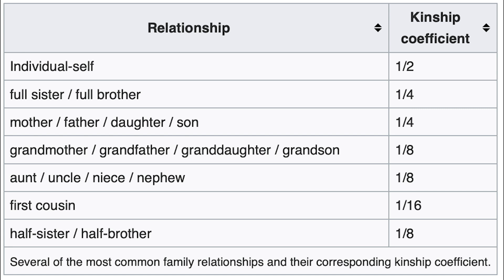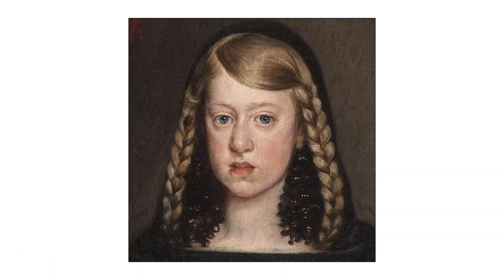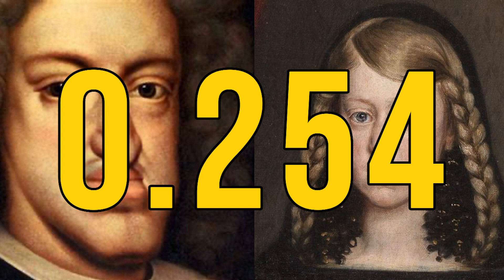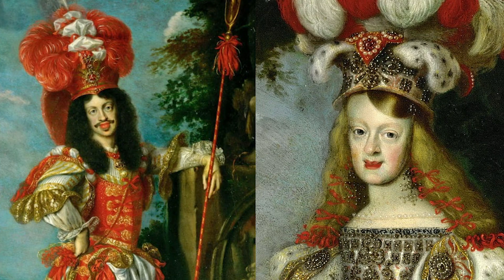However, the consanguinity coefficient does not always predict poor outcomes, at least in the case of inbred people going on to have relatively healthy lives. Our first example is Margarita Teresa of Spain, the full sister of Charles II. Because they were full siblings, Margarita too had an inbreeding level higher than the child of two full siblings — the exact same level as Charles II. However, unlike her brother, she was able to go on and have numerous children, despite also marrying her own uncle, as the Habsburgs seriously liked to keep it in the family.